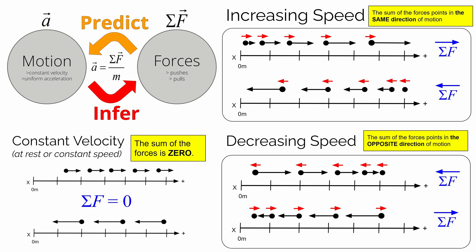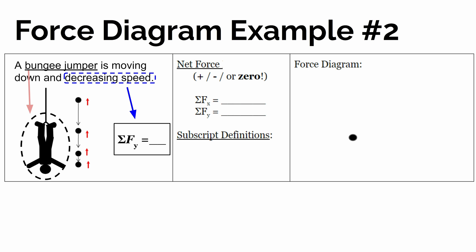There must be more force up than down. So looking at our motion map here, the bungee jumper is decreasing speed while moving in the negative direction. The velocity is getting less negative, so it's a positive acceleration.